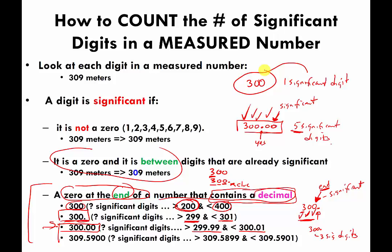Writing 300.00 says that whatever you're measuring is more than 299.99 and less than 300.01 — five significant digits versus one for plain 300 with no decimal point. You can see just by counting significant digits which measurement is more precise. The same logic applies to something like 309.5900 — the last zero is the last digit, there's a decimal point, so 309.5900 has seven significant digits.